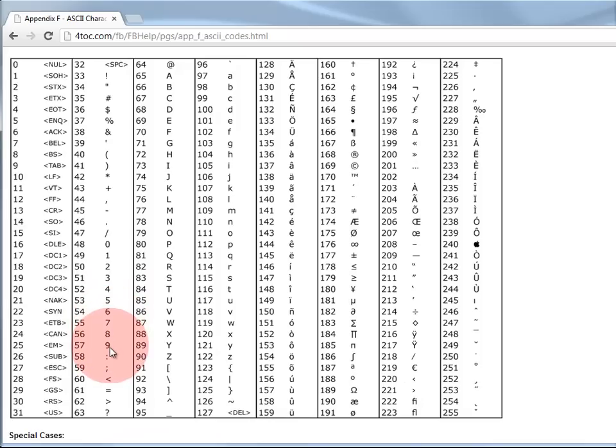48 for 0, 49 for 1, 50 for 2. Also, the letters of the alphabet, A, B, C, D, E, are all lined up. Uppercase A starts at 65.